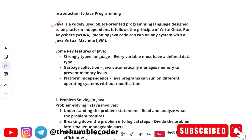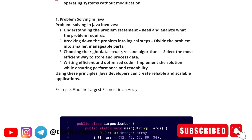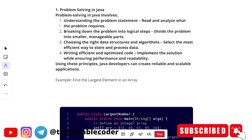Let's start with an introduction to Java programming. Java is a widely used object-oriented programming language designed to be platform independent. It follows the principle of 'write once run anywhere', also called WORA, meaning Java can run on any system with the Java Virtual Machine (JVM). Some key features: it is a strongly typed language — every variable must be defined with a data type — and Java automatically manages memory through garbage collection to prevent memory leaks.